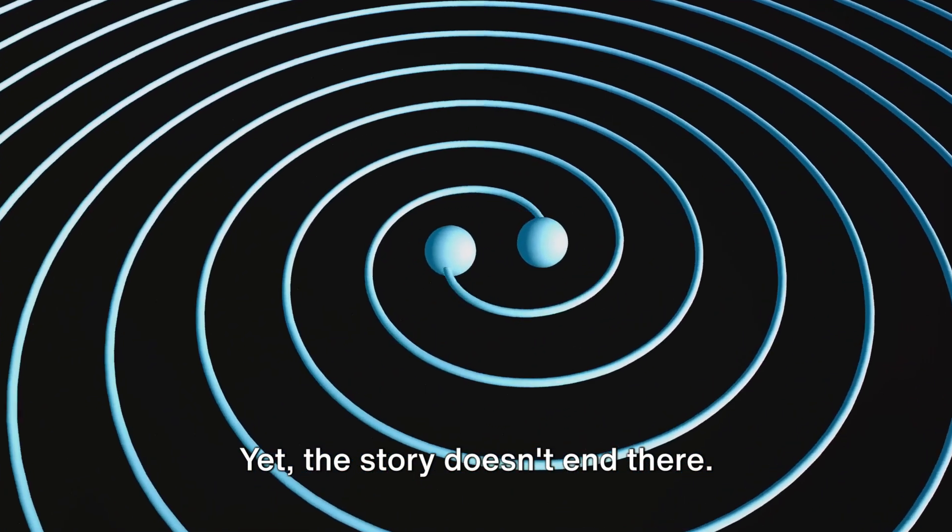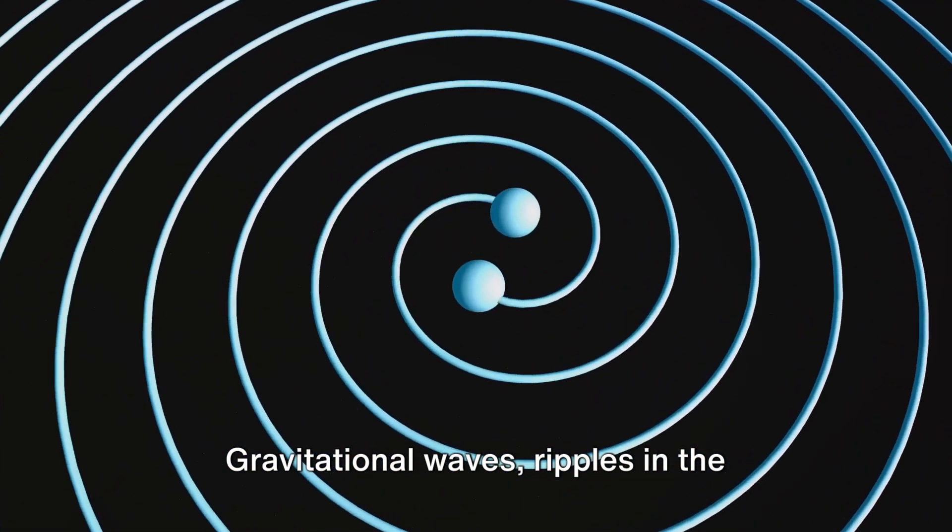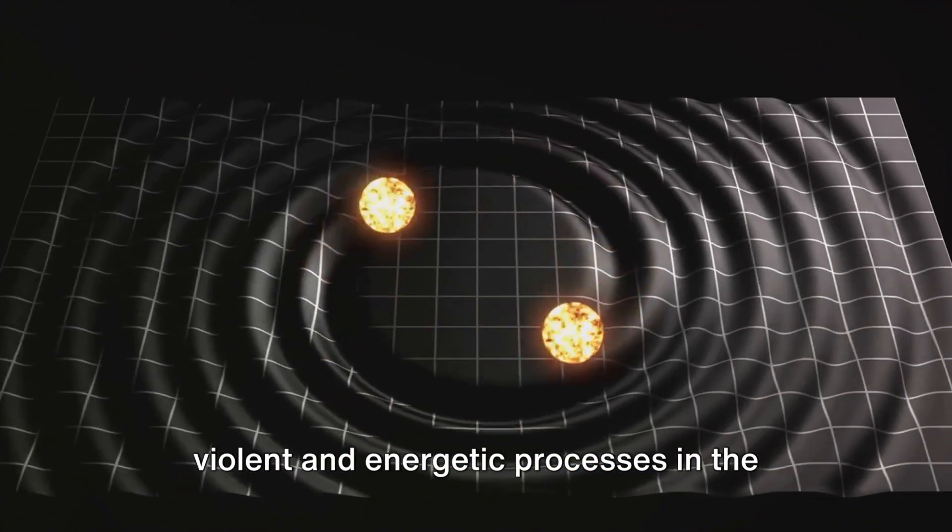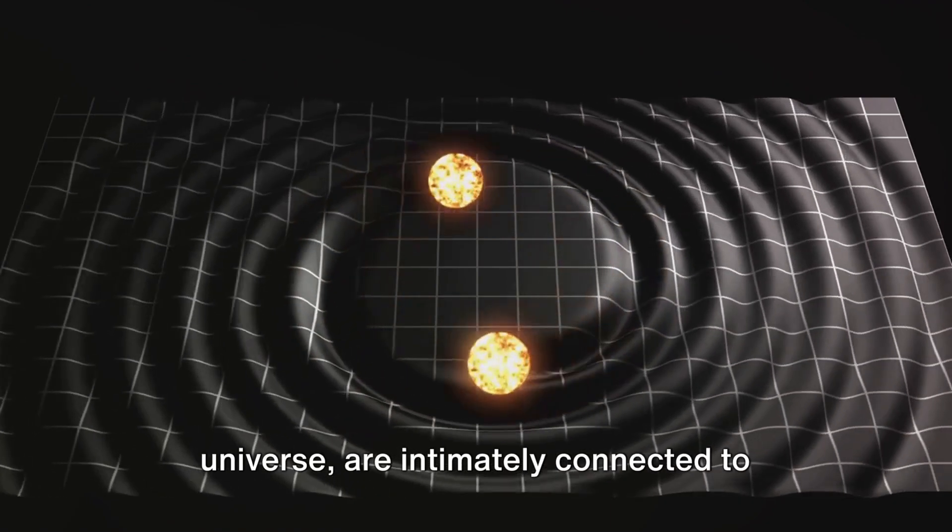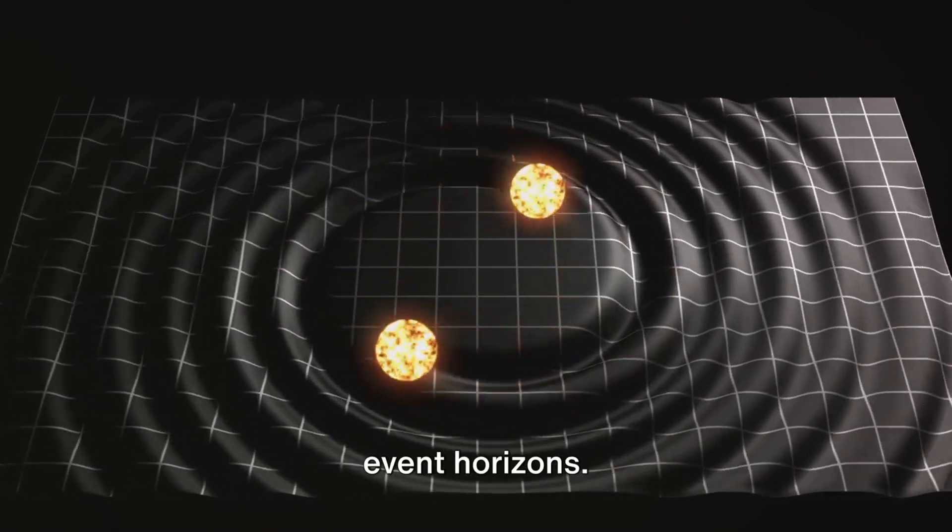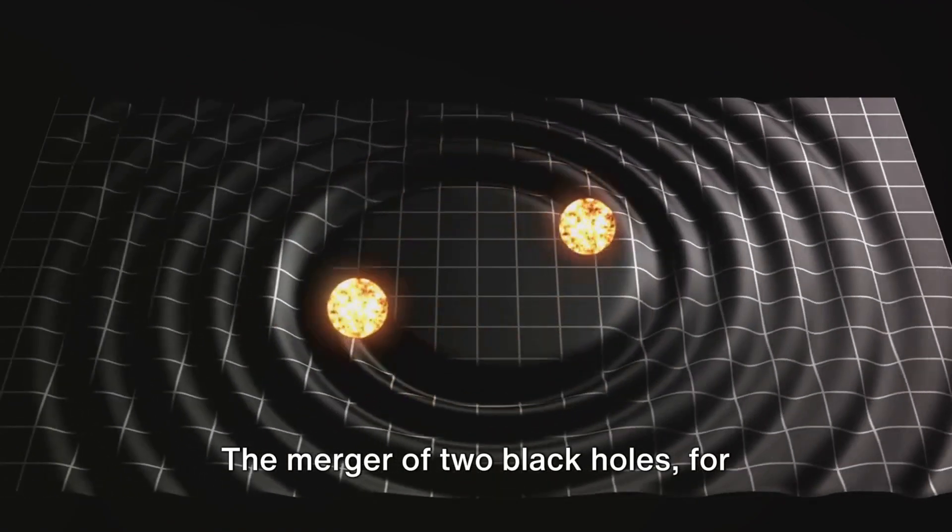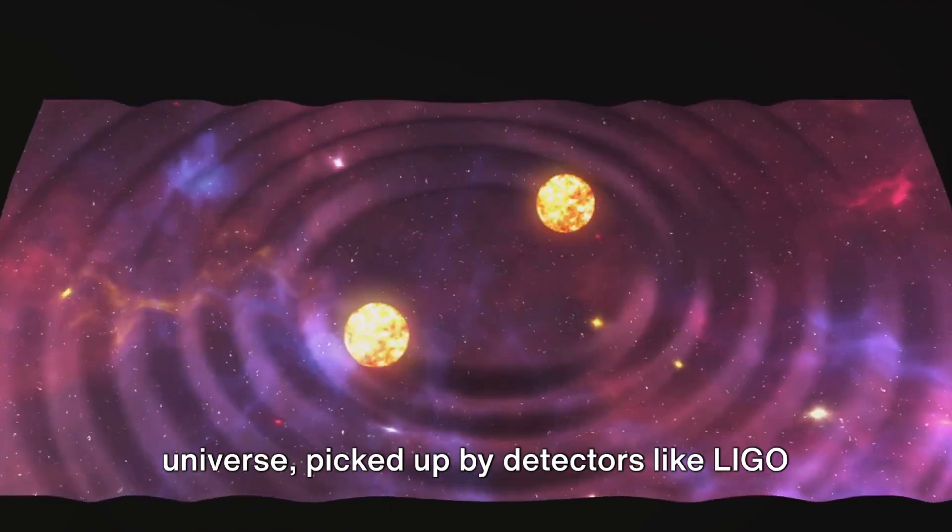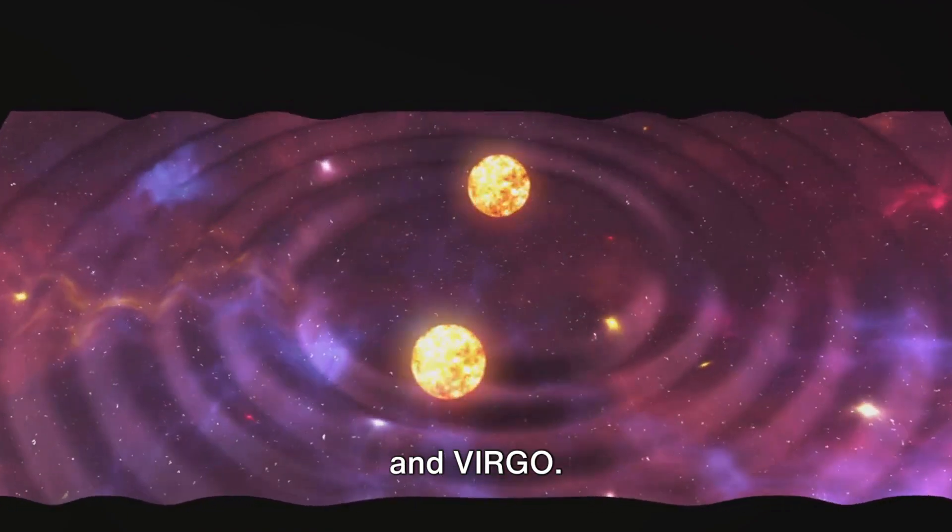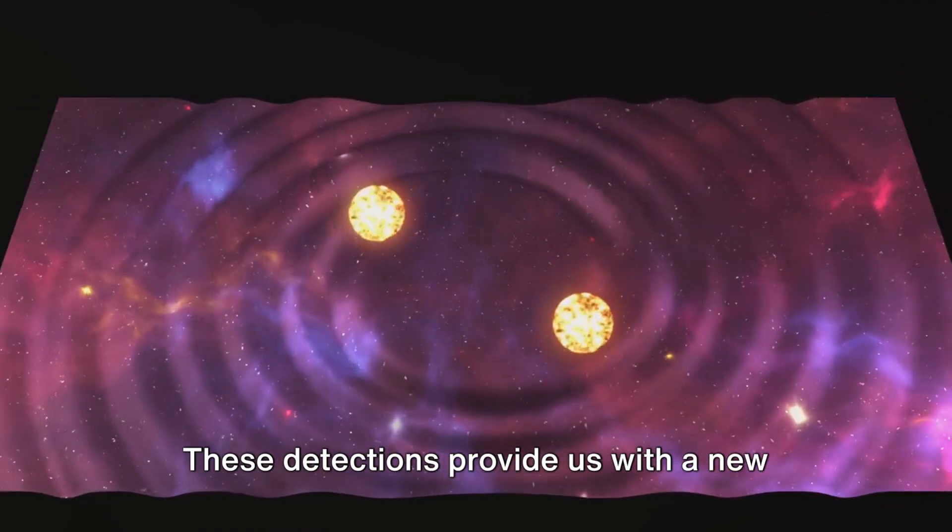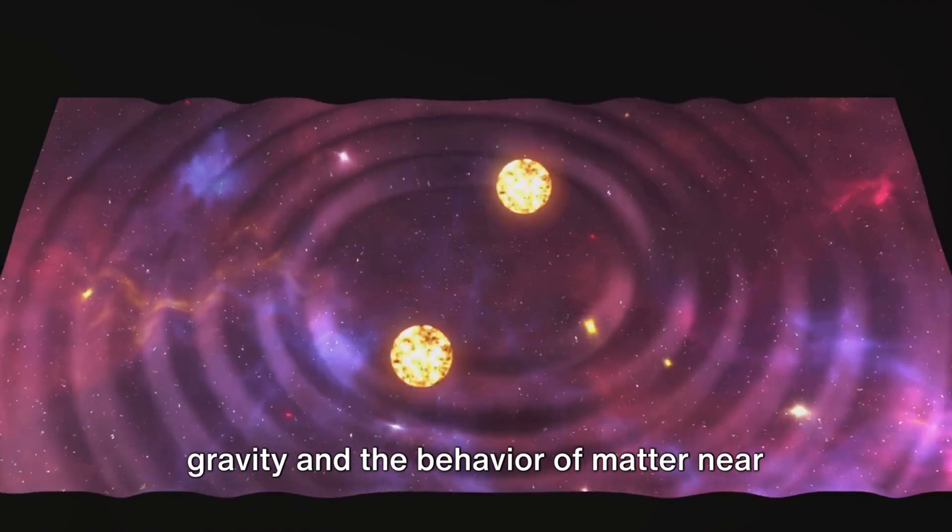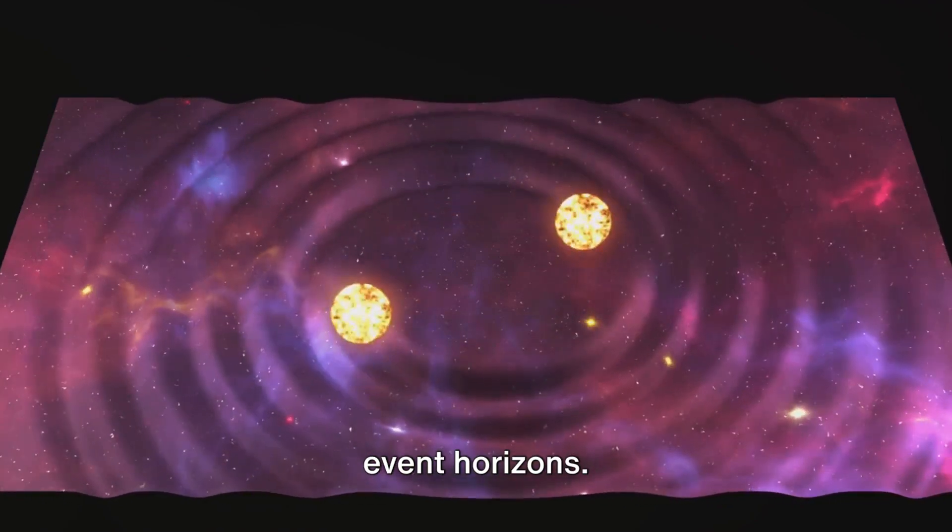Yet, the story doesn't end there. Gravitational waves, ripples in the fabric of space-time caused by the most violent and energetic processes in the universe, are intimately connected to event horizons. The merger of two black holes, for instance, sends out these waves across the universe, picked up by detectors like LIGO and Virgo. These detections provide us with a new way to understand the nature of strong gravity and the behavior of matter near event horizons.